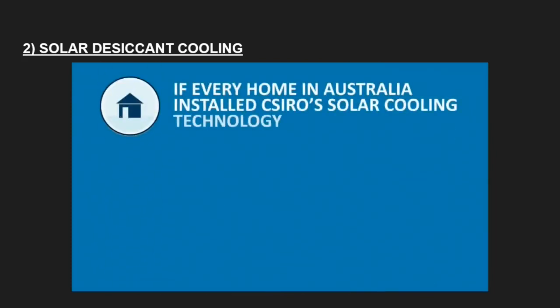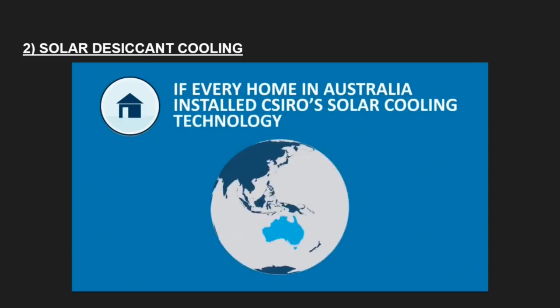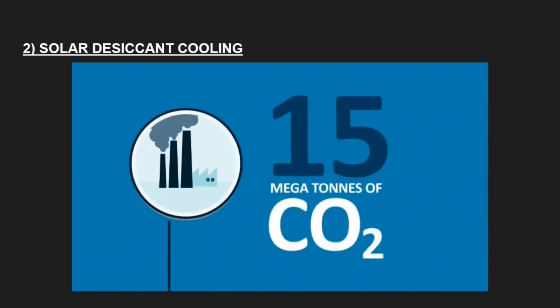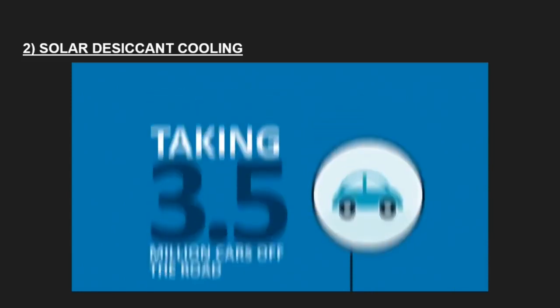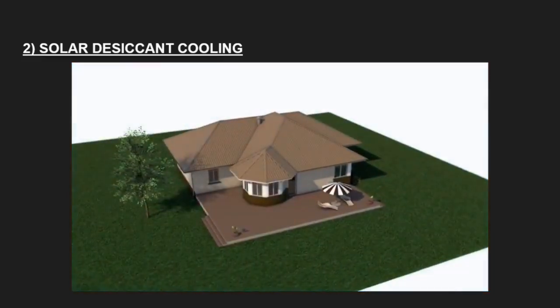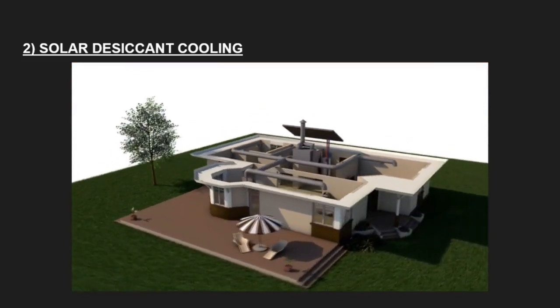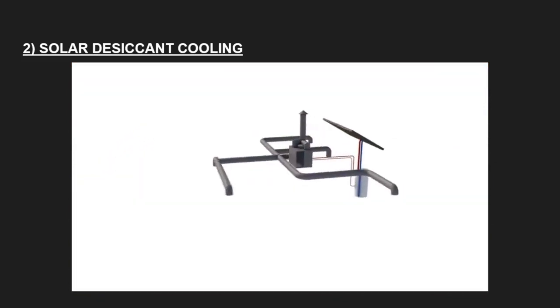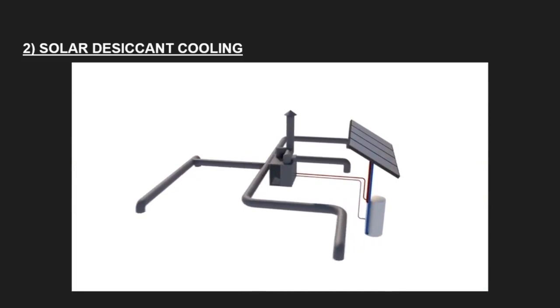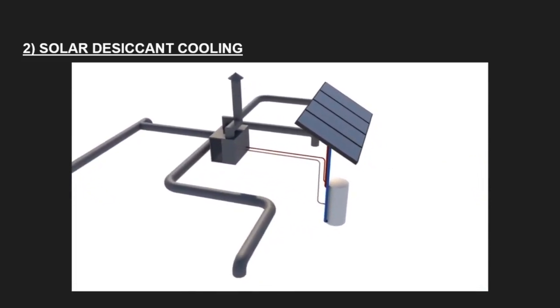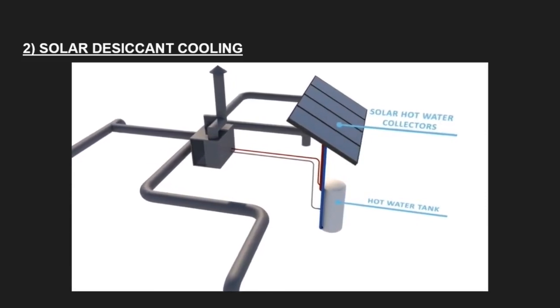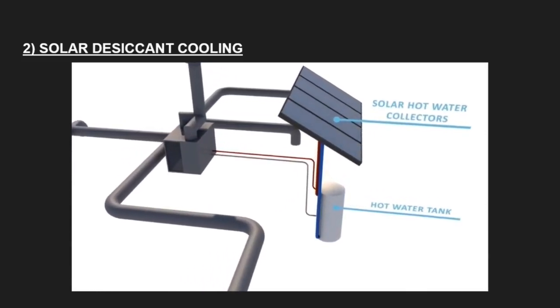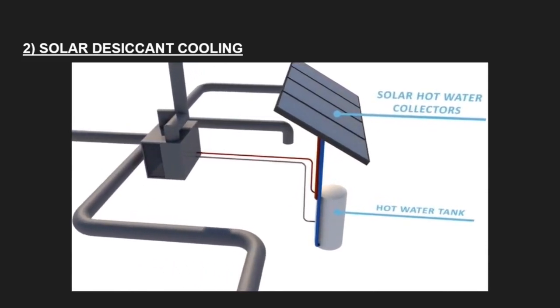CSIRO has invented a new solar air conditioning system for Australian homes. This technology solution will reduce Australia's emissions, reduce your energy bills, and reduce demand for electricity and gas. If every home in Australia installed this solar cooling technology, it would save 15 megatons of CO2 or be equivalent to taking 3.5 million cars off the road.